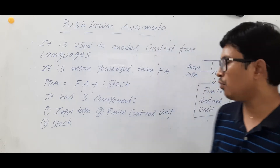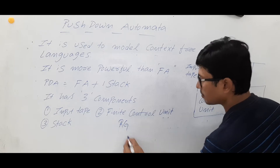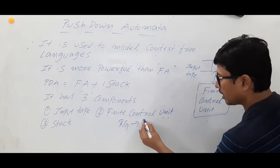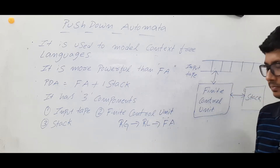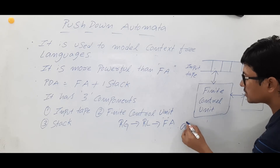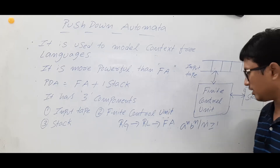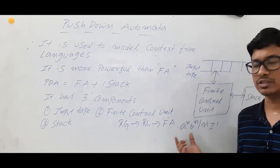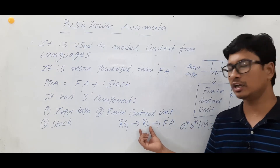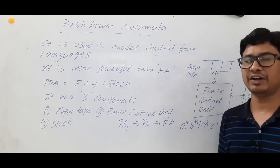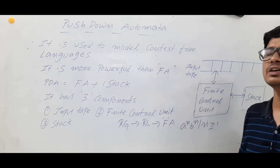If you have watched my earlier videos, I have discussed about regular grammar and regular languages. Then we discussed how regular languages can be modeled by using a finite automata, and then we discussed that a^n b^n, where n is greater than or equal to 1 — these kinds of languages are not regular languages. Using the pumping lemma we have proved that it is not a regular language, and if it is not a regular language we cannot model it using a finite automata.